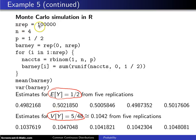We are going to replicate this experiment 100,000 times. For each replication, you will have four customers, and your probability is one-half that each of them will generate some revenue for Barney.